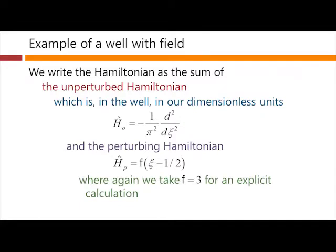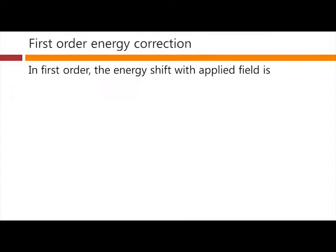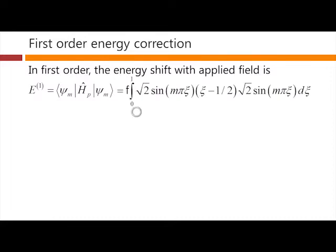And again, for our calculation explicitly, we're going to choose F equals 3, so we can compare with our previous calculation. In first order, the energy shift of the applied field is just given by this simple expression here, and that reduces to this integral. Well, that integral is basically ξ minus 1/2 times sine squared mπξ. But that's 0.